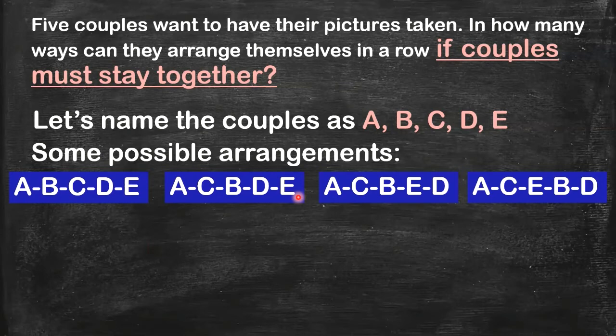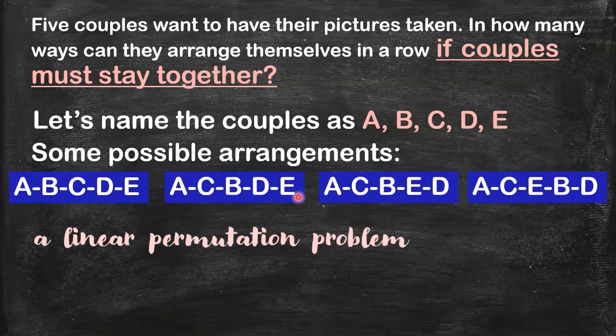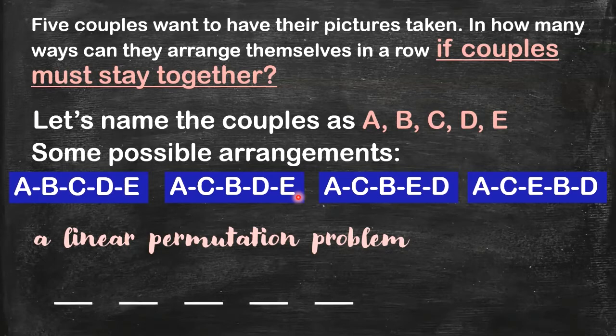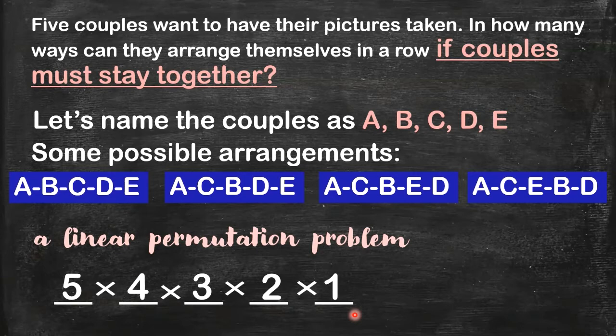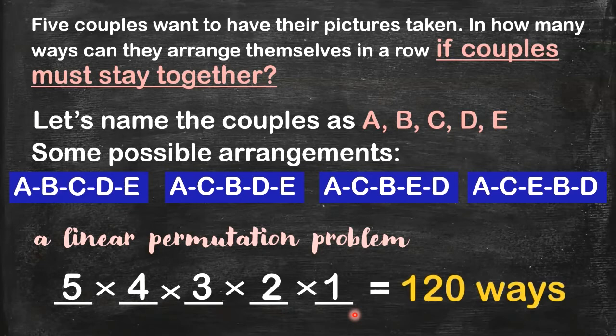Since we are arranging five couples in a row, obviously this is a linear permutation problem. We can have five blanks and then count the possible choices. For the first blank, how many choices do we have? We have five couples to choose from. So that's five here. And then for the next position, we only have four couples left. So that's four here. And so on. At the third position, three couples left. And then here, we only have two couples left, and here, one. Then we get their product. That will tell us the total number of possible arrangements of five couples. If you do the math, you will get 120 ways.